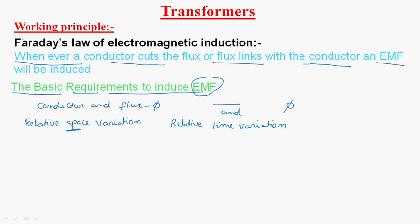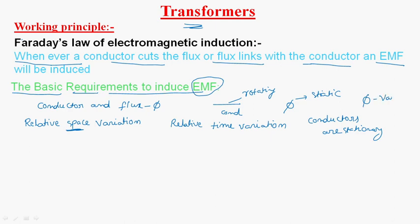In case of relative space variation, the conductor is the rotating one and flux is static. But whereas in case of transformer, conductors are stationary and flux is a variable one — variable one means it varies with respect to time. So as a whole, in case of transformer, we will use the relative time variation technique.